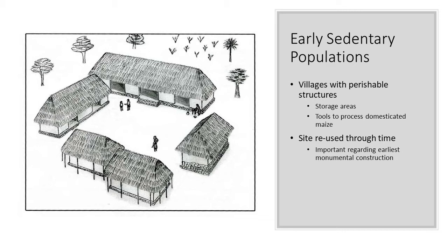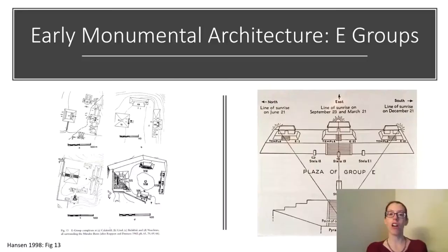These early sedentary populations in this region were occupying small villages made of perishable structures. There is a much later occupation at Coelho as well, and one thing we see from excavations there is continuity in terms of the occupation of the site and the people continuing to live there. The reuse of space becomes very important also when we talk about the earliest evidence of monumental architecture — these large constructions that would have taken cooperation and labor to build them. An example of monumental architecture from the Maya region are these types of architectural constructions called E-groups.